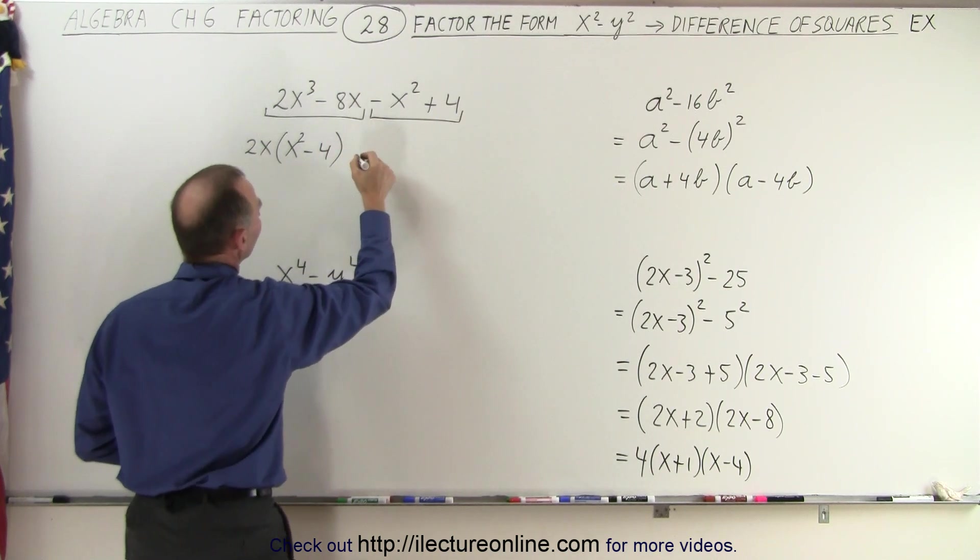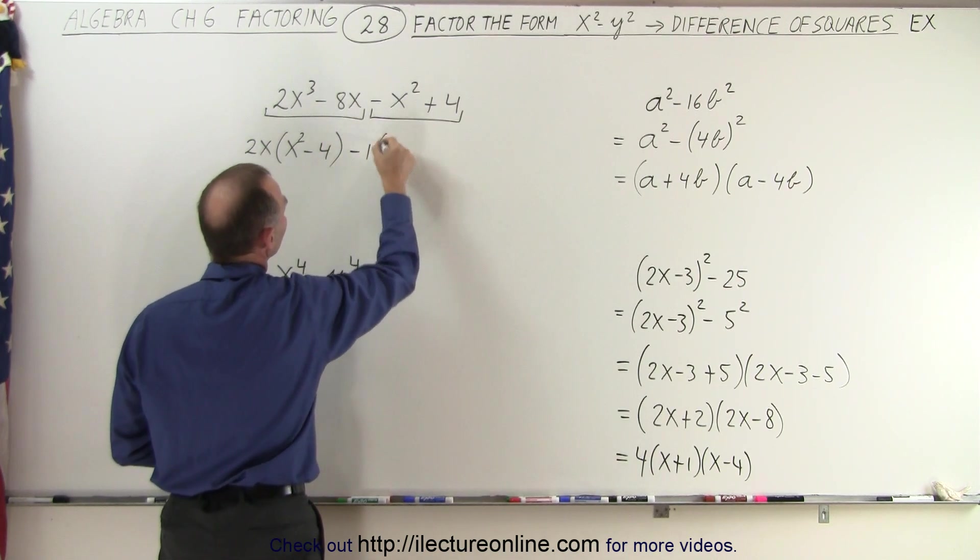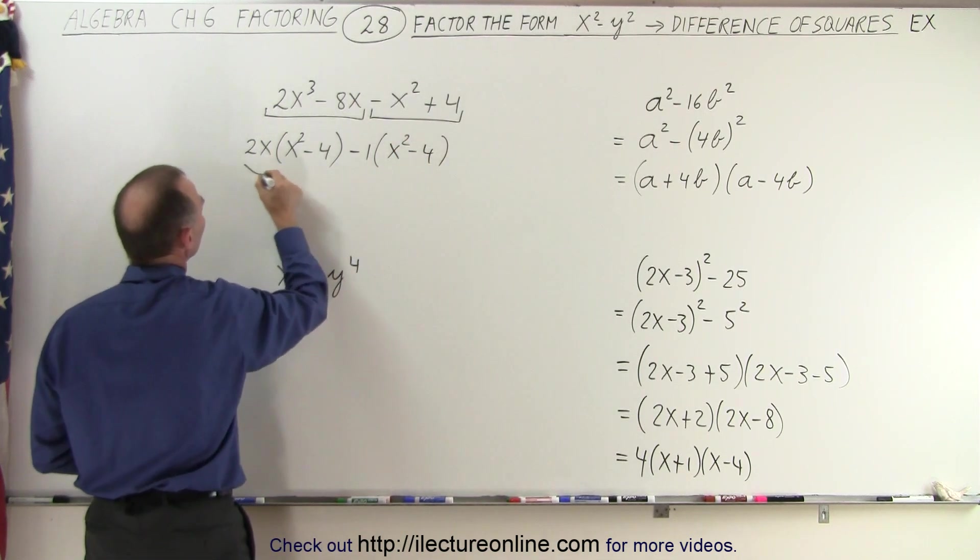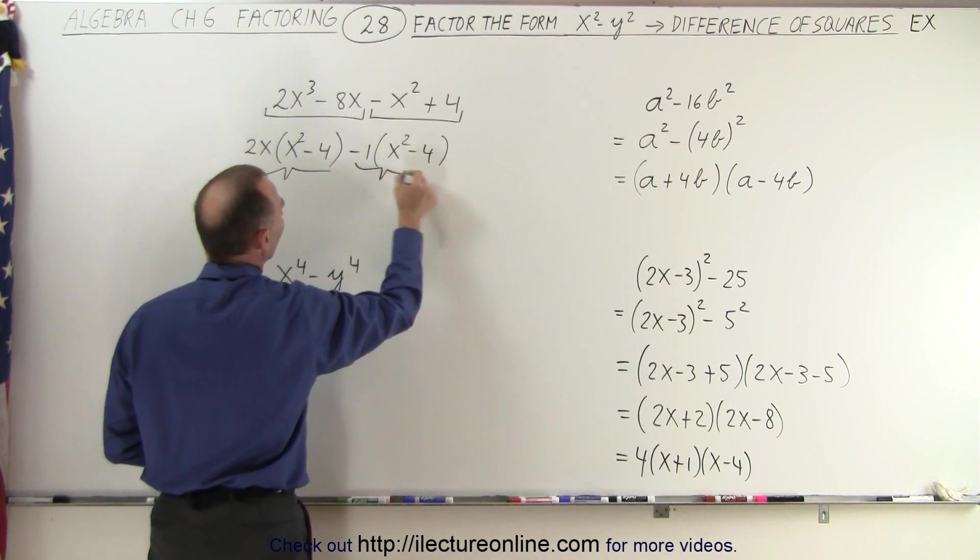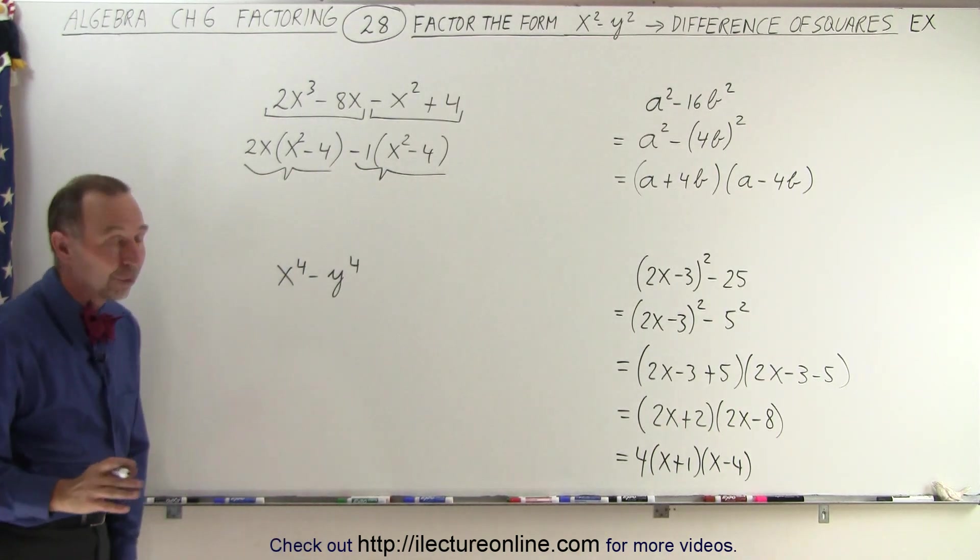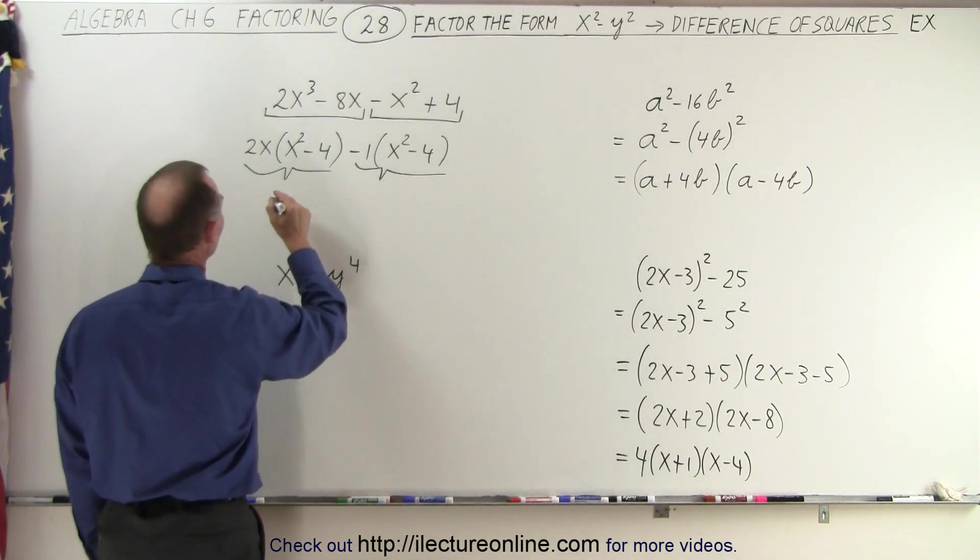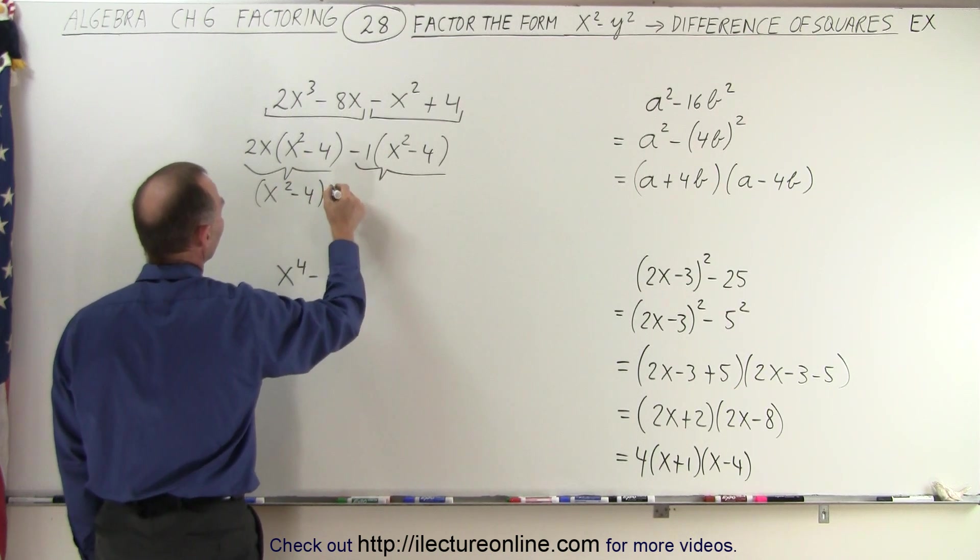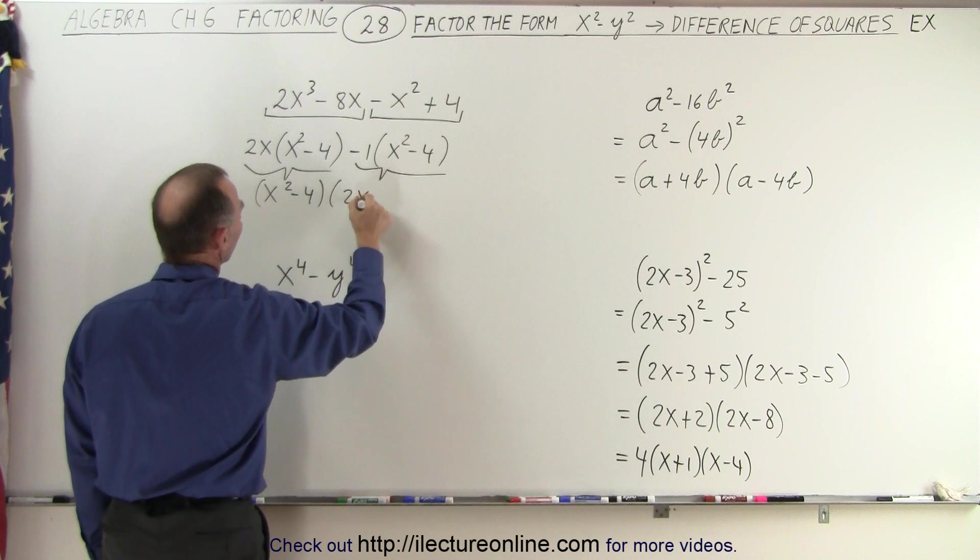And here we have, if we factor out a minus 1 times what we have left would be x² minus 4. And then you can see that here and here we have a common factor of x² minus 4, so we can factor that out. So it gives us x² minus 4 multiplied times 2x minus 1.